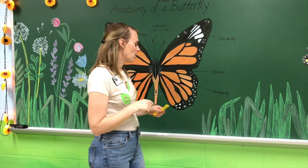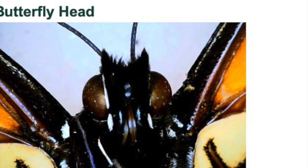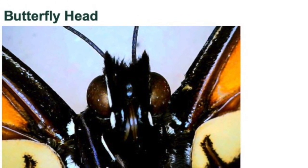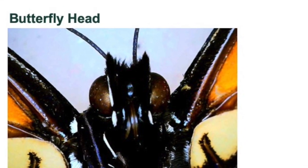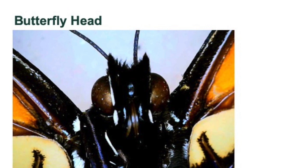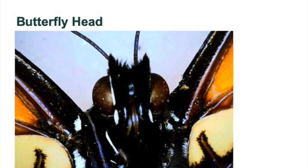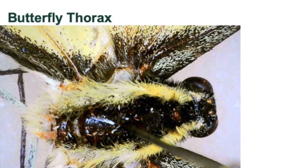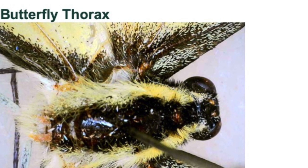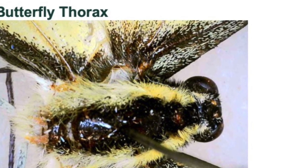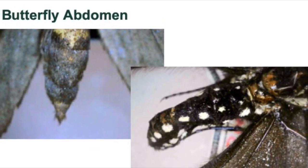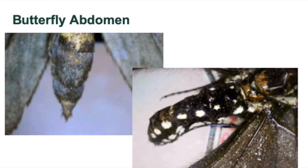Now we're going to take an even closer look at butterflies underneath the microscope with some digital pictures. Here we see our butterfly's head — one of the key parts are the compound eyes, which wrap around the head so our butterfly can see in front, behind, and to the side. This microscope photo shows our butterfly's thorax, which has lots of hair on it — this hair helps the butterfly to be a great pollinator. Here we see the butterfly's abdomen, and these pictures show that they come in different sizes, shapes, and colors.